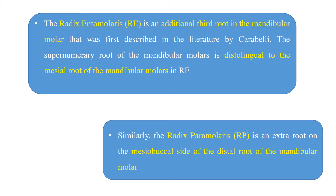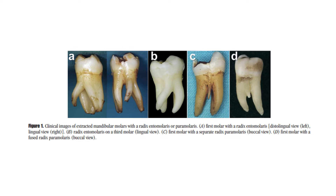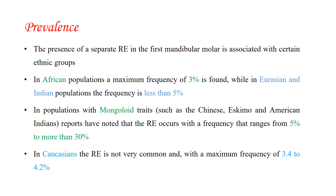These are clinical images of extracted mandibular molars with radix entomolaris or paramolaris. In figure A you can see a first molar with radix entomolaris from a distolingual view. These extra roots can vary — sometimes they are fully mature, and in other cases the extra root is very small and conical. It depends case to case what type of radix you are finding.